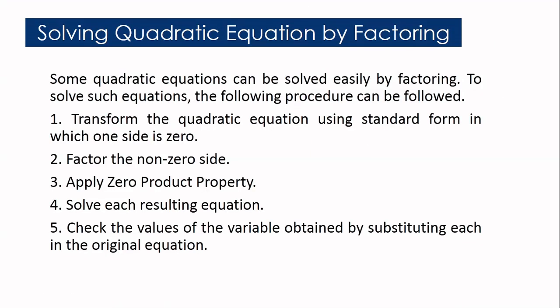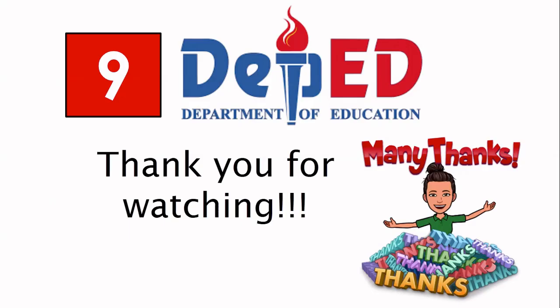So again, in solving quadratic equations by factoring, you follow these procedures: 1. Transform the equation to standard form with one side equal to zero. 2. Factor the non-zero side. 3. Apply the zero product property. 4. Solve each resulting equation. 5. Check the values by substituting each in the original equation. That's it for today. Thank you for watching.